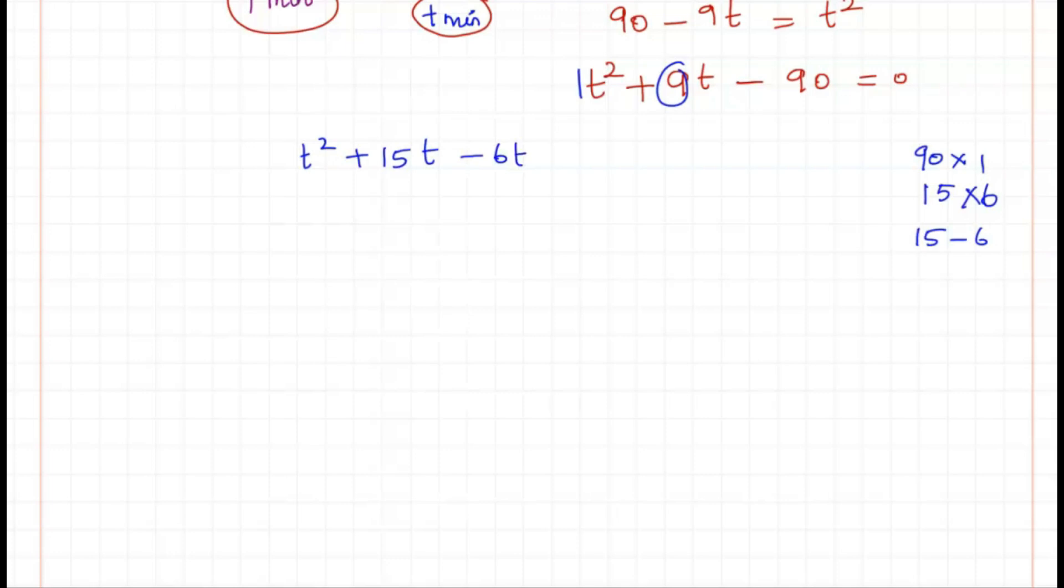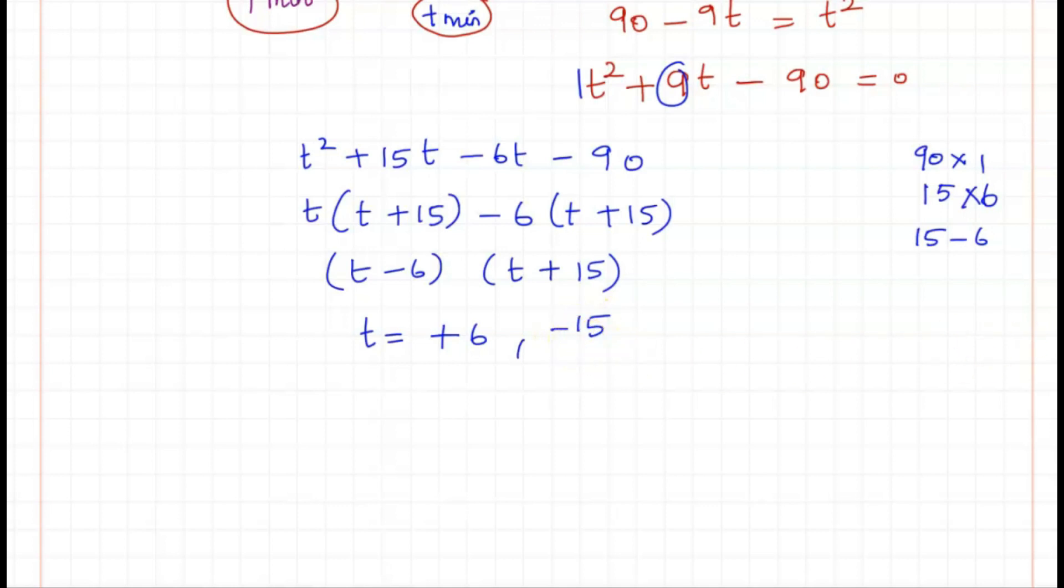Factoring: (t-6)(t+15) = 0, so t = 6 or t = -15. Since this is negative, we can ignore it, so t = 6 minutes.